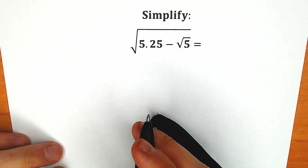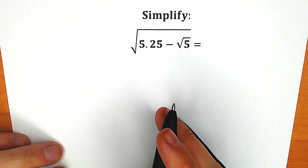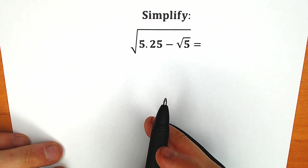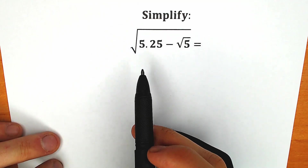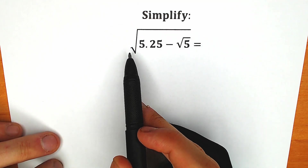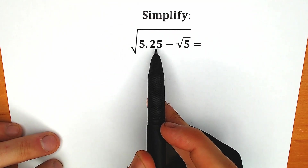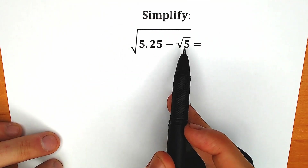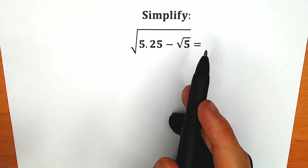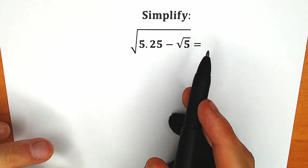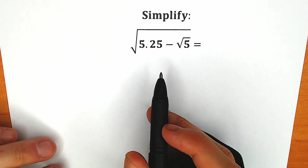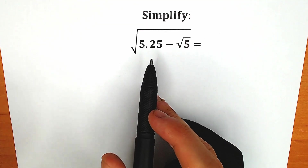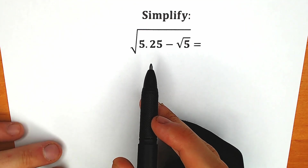Hello everyone, happy to see you here. Welcome back to my channel. I'm Mathematics. Today we have a very interesting and tricky question. We need to simplify this expression: square root of 5.25 minus square root of 5. If you have your answer or your approach, you can write it down in the comment section. This is a very, very tricky question.